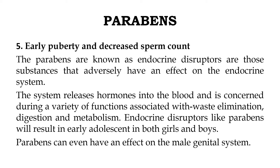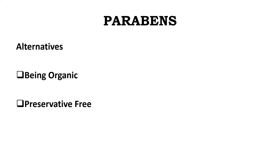Endocrine disruptors like parabens can result in early adolescence. When one uses cosmetics for beautification, incorporation of such substances into the skin resulting in hormonal imbalance is not acceptable. Although parabens have a history of over 100 years, it is recommended not to use them because they are linked with hormonal imbalance and carcinomas. The approach of being organic — meaning totally preservative-free — is preferred, even if the shelf life is reduced.